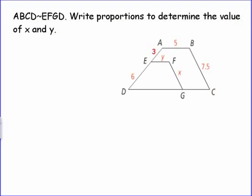In this problem, they tell us that ABCD, this polygon right here, this bigger guy, is similar to the smaller guy EFGD. They say we need to write a proportion to determine the value of x and y, so we need to solve for x and y.